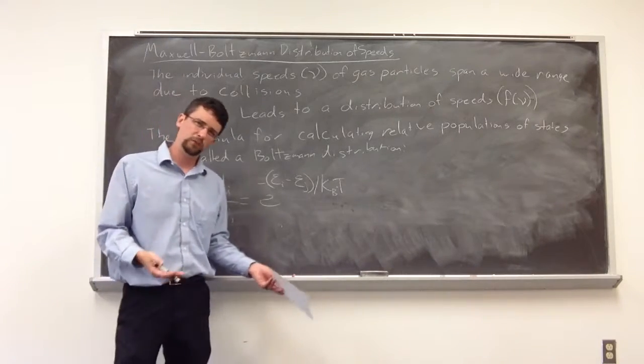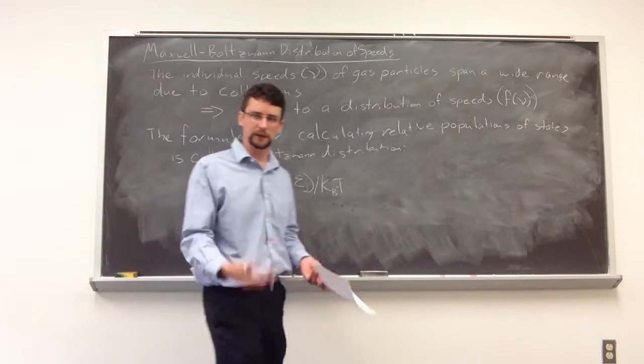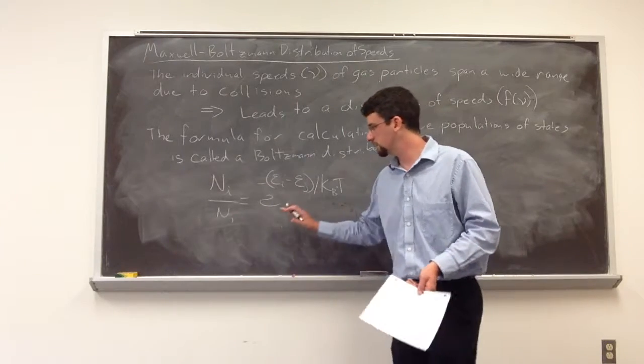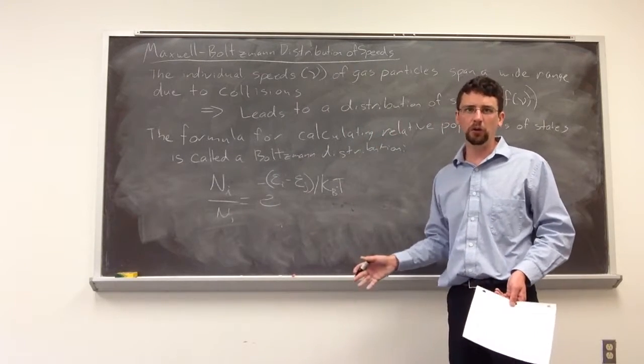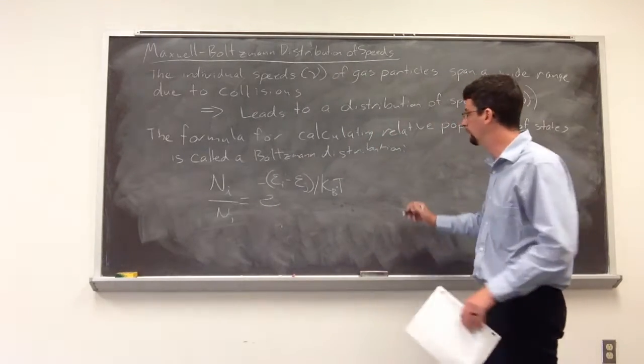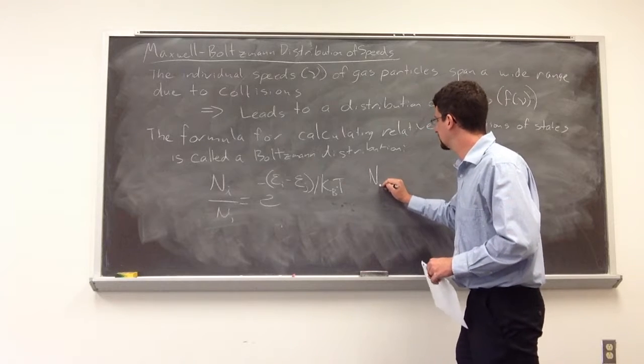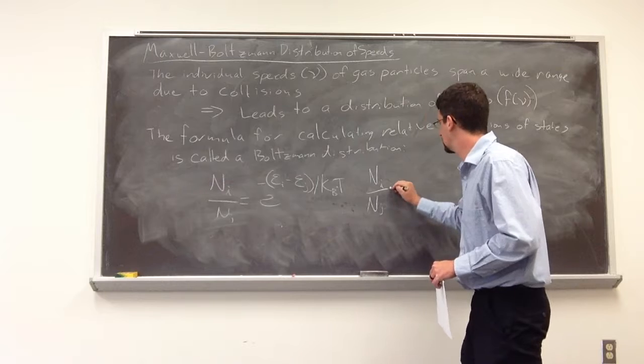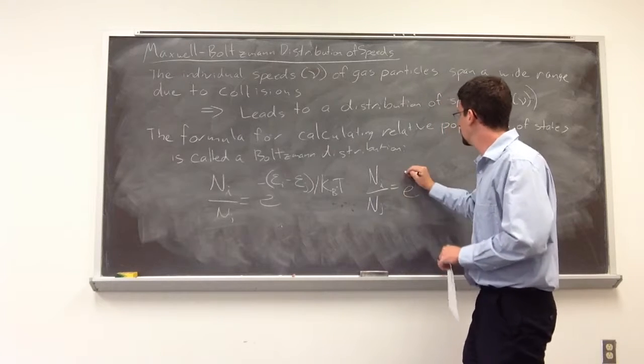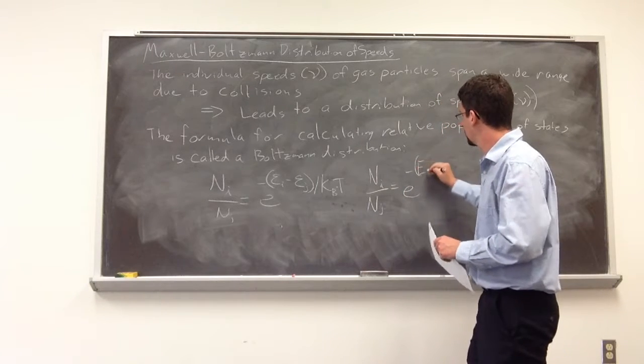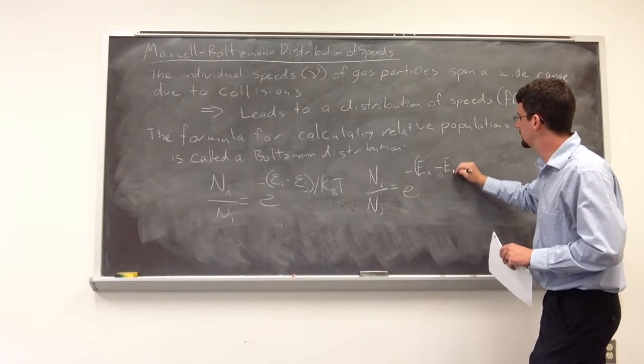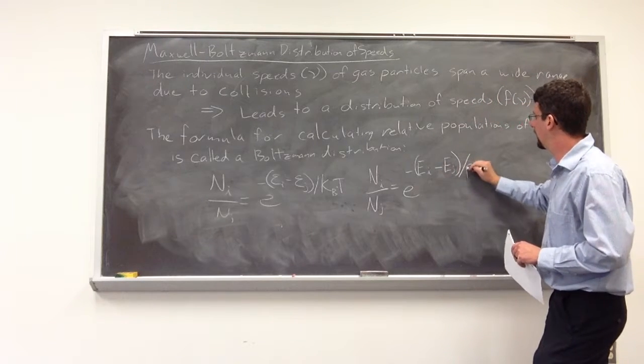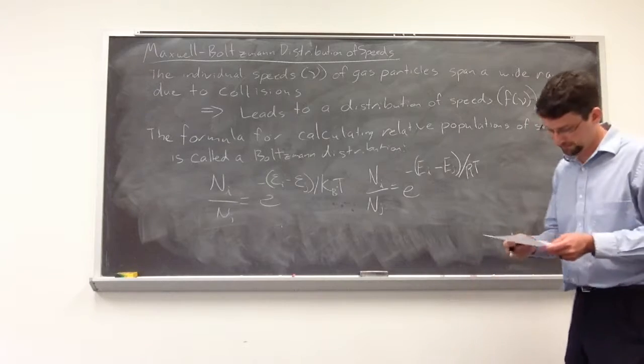So if we want to consider that on a per mole basis, we can transform this. It looks almost the same, but the notation changes just a tiny bit. We have E to the negative E sub I minus E sub J divided by RT in that case.